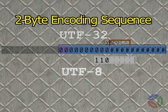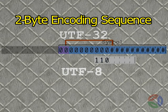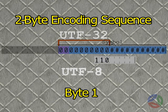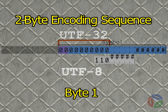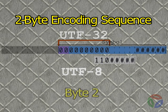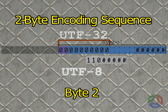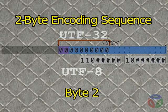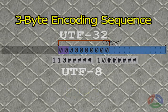If any of bits 7 through 10 are 1s, but bits 11 through 20 are all 0s, then the code point occupies 11 bits and requires 2 bytes for encoding. In this case, the start byte begins with 110, leaving space for the first 5 bits of the code point. Encoded byte 2 begins with 10, leaving space for the last 6 bits of the code point.